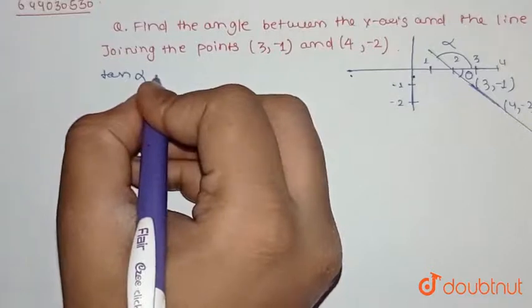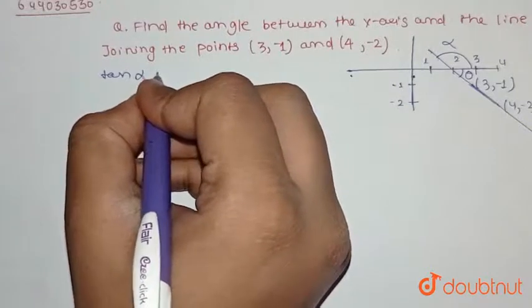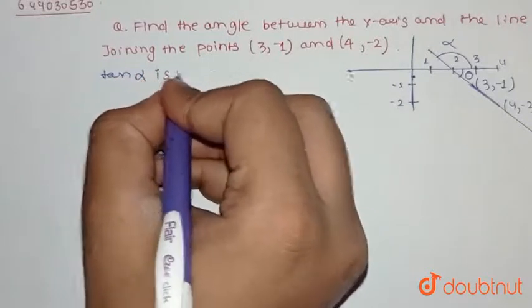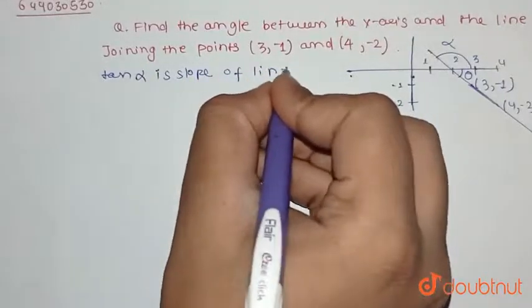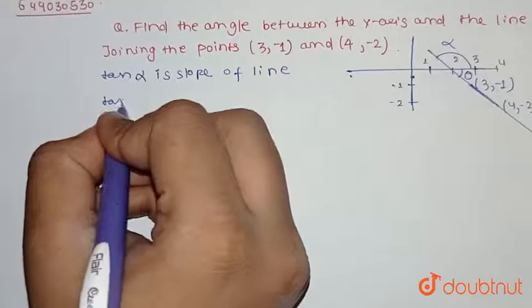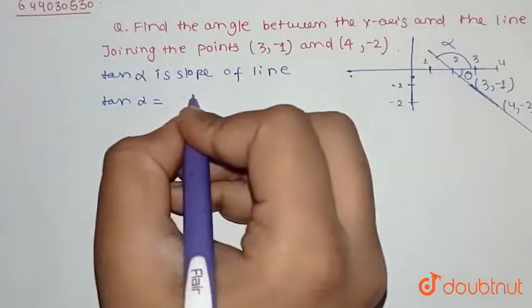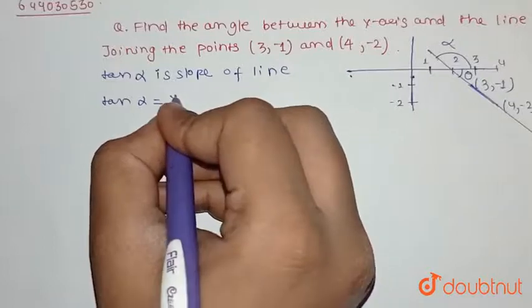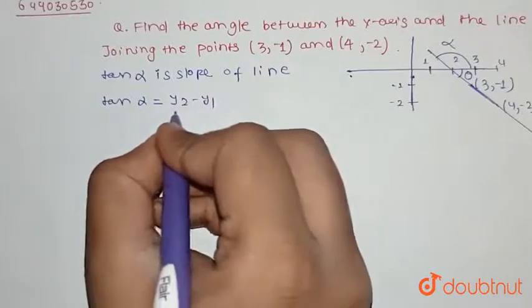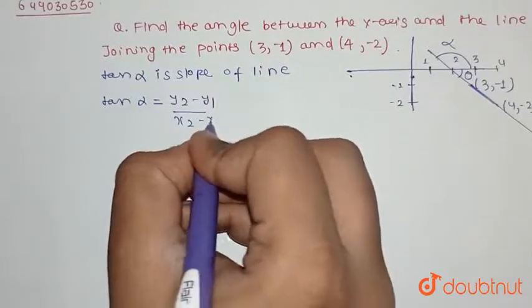So tan alpha is equal to the slope of this line. Tan alpha equals y2 minus y1 upon x2 minus x1.